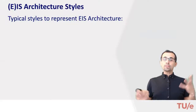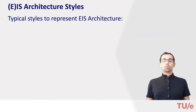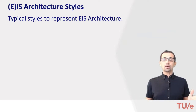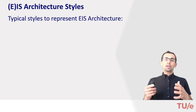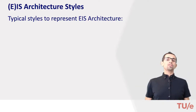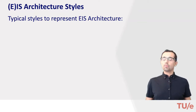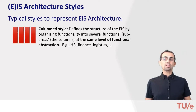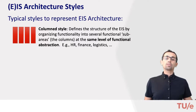What types of architecture styles can be distinguished? First, what is an architecture style? A style describes the overall structure of an architecture at a high level of abstraction — a kind of meta-architecture. There are three typical styles we can distinguish: column, layered, and component-oriented.